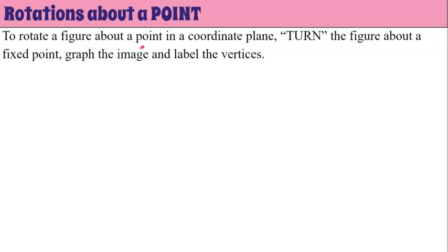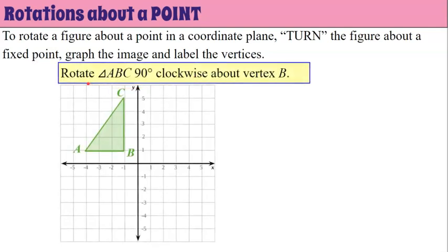To rotate a figure about a point in a coordinate plane, we're going to turn the figure about the fixed point, graph the image, and label our vertices. Our directions state rotate triangle ABC 90 degrees clockwise about vertex B.